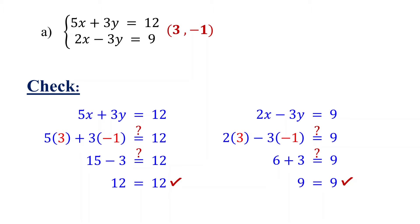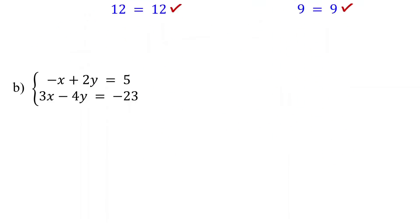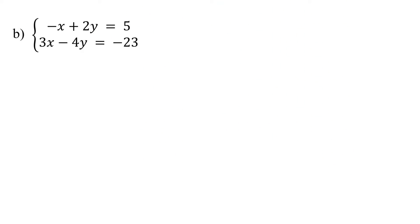In this example, the coefficients of the y variable were opposites and immediately cancelled out when added. But what if you don't see a variable that can be eliminated right away when you add the equations? In this next example, adding the two equations will not eliminate either the x or y variable. So what can you do in such a situation?